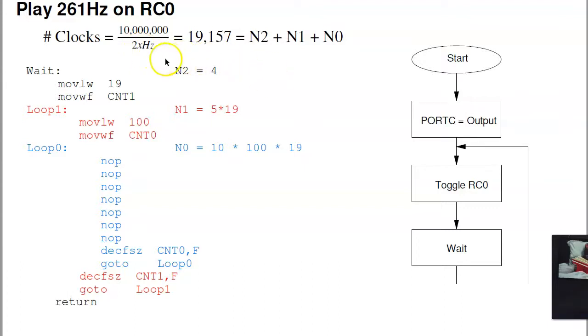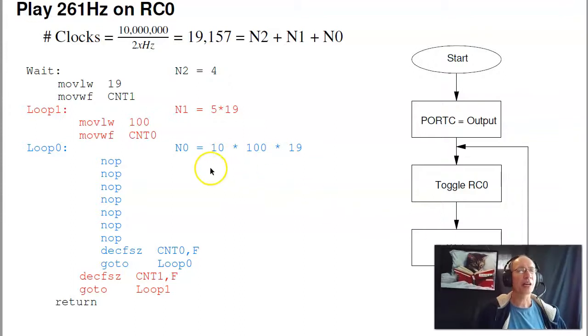That means I need to burn 19,000 clocks. One way to do that is have a subroutine that's got 19,000 no-ops. That does work. It's not very stylish, but it does work. Another option is to put it in a loop.